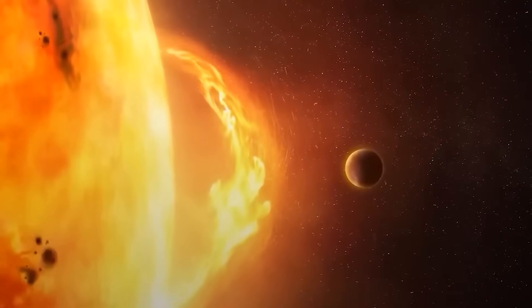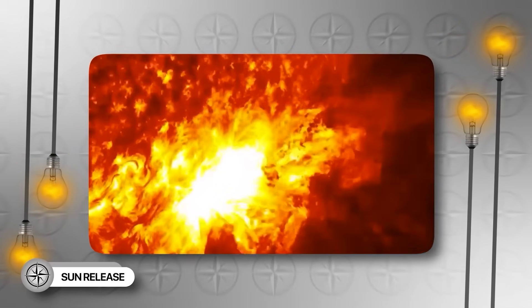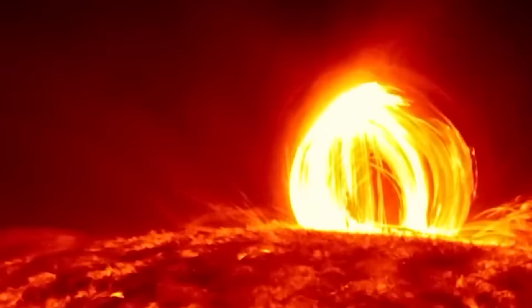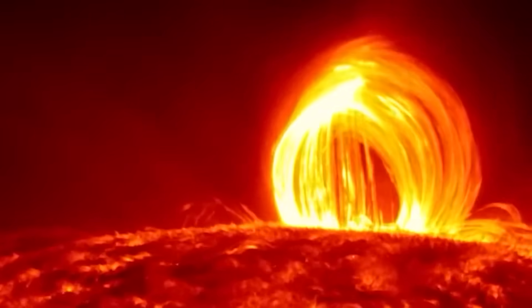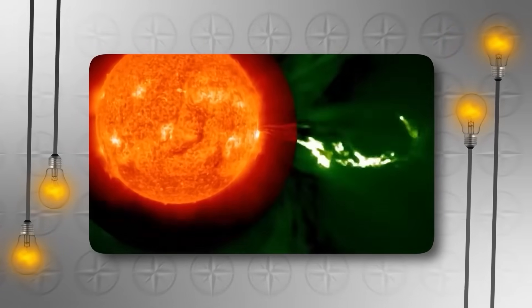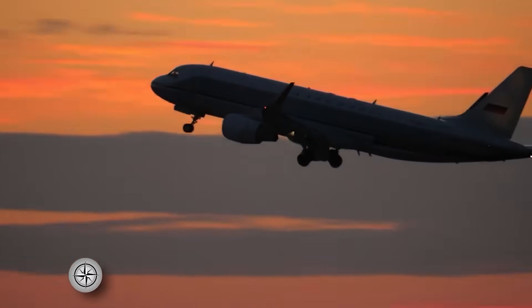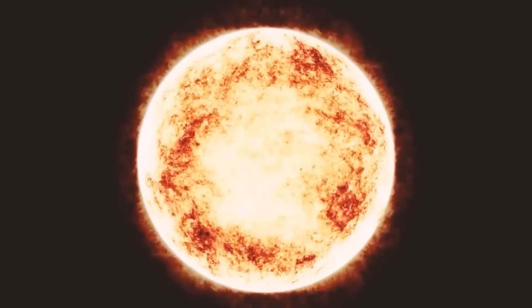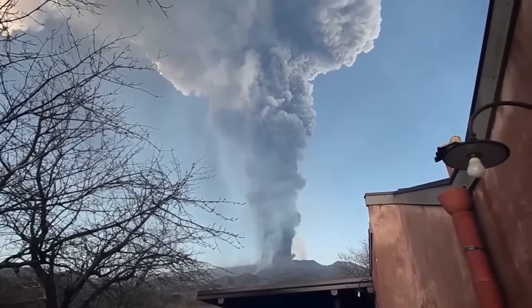Solar storms have, time and again, shown their ability to disrupt technology. When the sun releases a burst of energetic particles, as in a strong flare or coronal mass ejection, the resulting geomagnetic waves can destabilize power grids, satellites, and even ground-based electricity infrastructure. Power utilities monitor for geomagnetically-induced currents that can overload transformers and cause blackouts. Airlines may reroute flights to avoid communications blackouts at high latitudes. Even underground cables and pipelines can experience induced currents or corrosion during the most severe space weather.